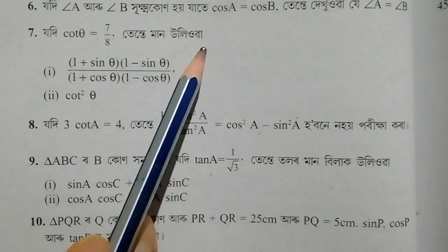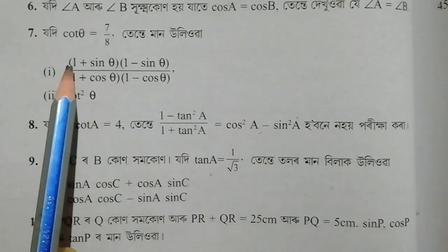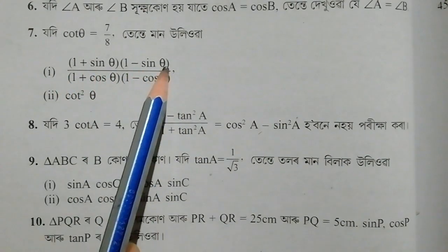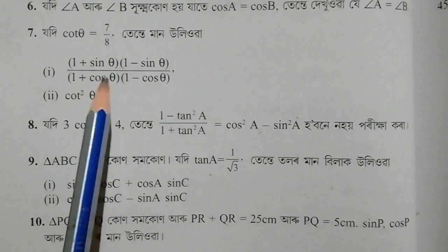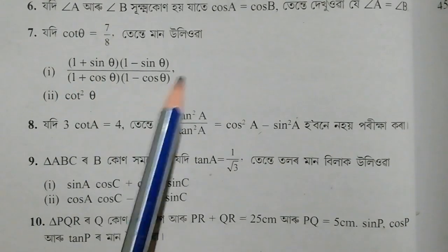evaluate the expression: 1 plus sin theta, whole into 1 minus sin theta, divided by 1 plus cos theta, whole into 1 minus cos theta.